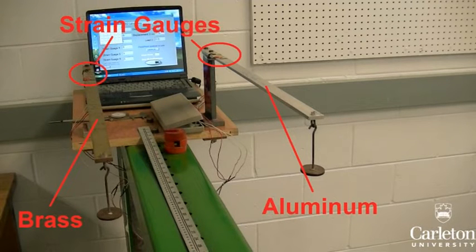The strain gauges are located here on both beams. All are connected to the computer on which the readings can be seen.